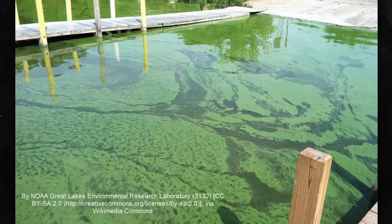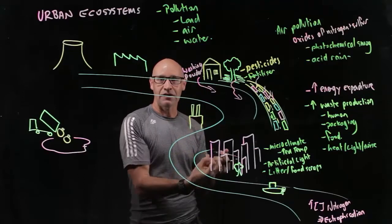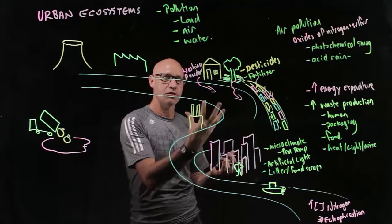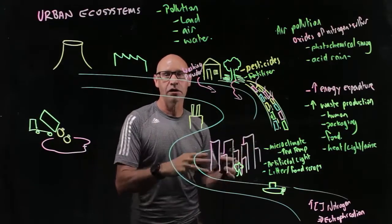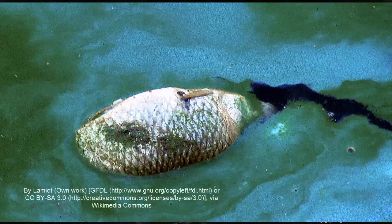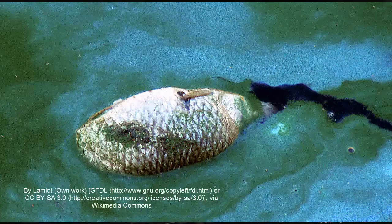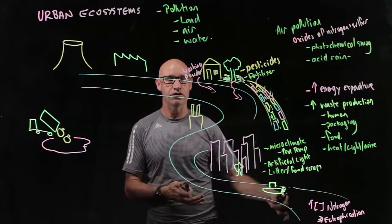But when that algae dies, it decomposes at the bottom of the waterway by bacteria that need to take oxygen for respiration. They take oxygen out of the water to the point where we have a hypoxic area, a low oxygen area, and we've got a dead zone. So suddenly all of the fish start to be belly up. They die because of lack of oxygen. And that's a dead zone related to increased nitrogen.